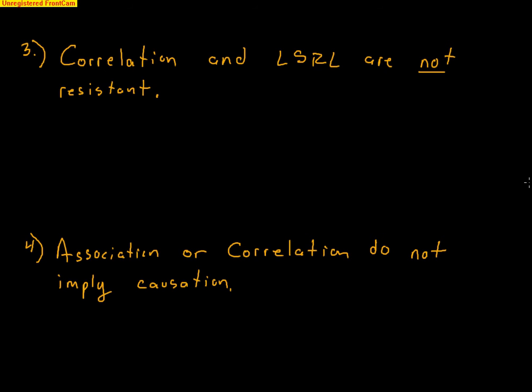Lastly, association or correlation do not imply causation. We might find strong relationships and good prediction models, but we cannot say the explanatory variable causes the response variable. It takes much more to establish causation, which we'll cover in later units. That's it for linear regression — we'll talk more in class.